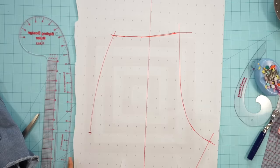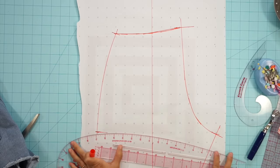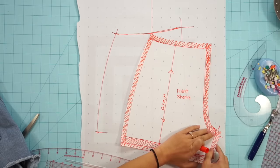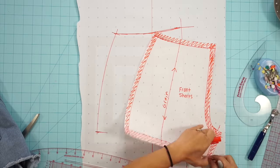Notice how I'm lining up the pattern piece on the seam line and not including the side seam. That's because we haven't added our seam allowance to the back shorts yet.